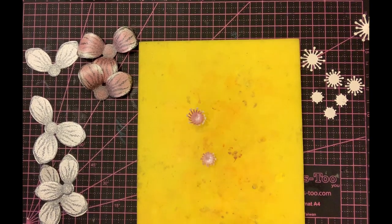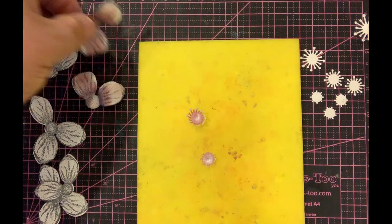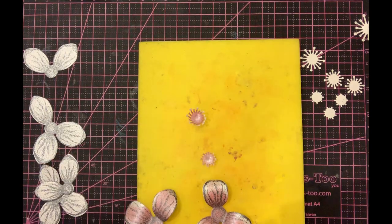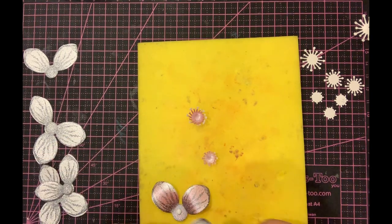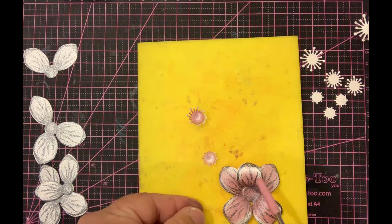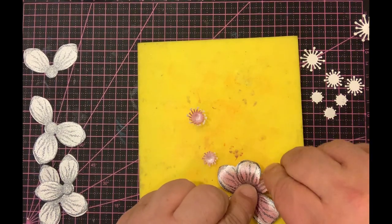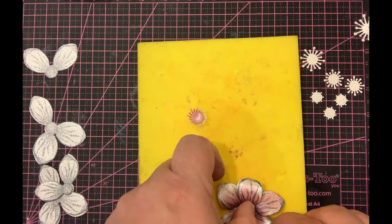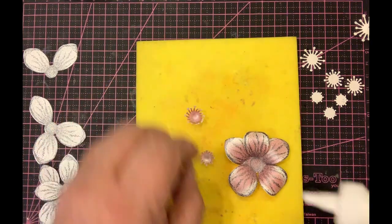Now we're going to put the flower together. You've got an option of either putting two onto three or three onto two. I'm going to pop a little bit of glue on the two and pop the three on top, giving you that one, two, three, four, five petal flower. You can move and maneuver the petals round if you prefer a different shape.